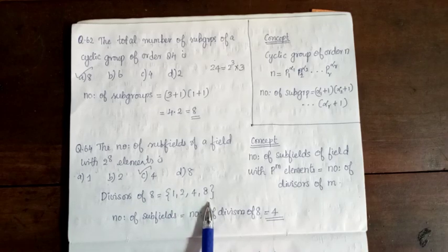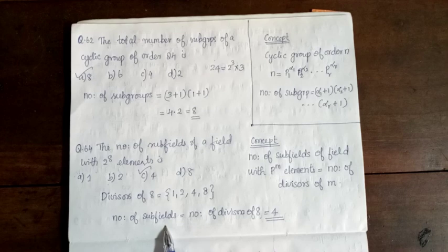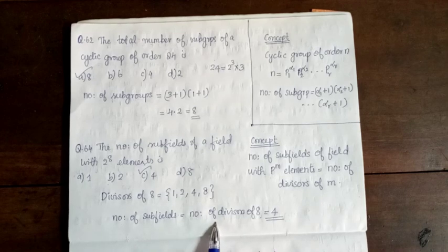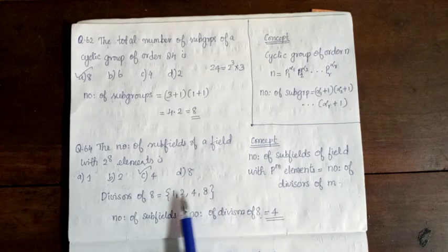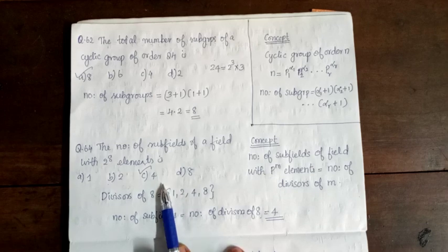The number of subfields equals the number of divisors of 8. The divisors of 8 are 1, 2, 4, 8 — that is 4 divisors. So option C is correct.